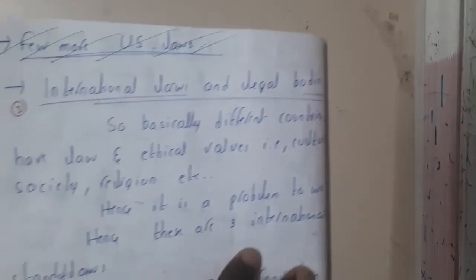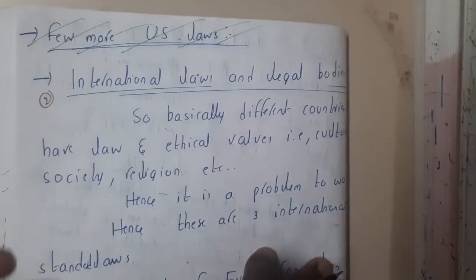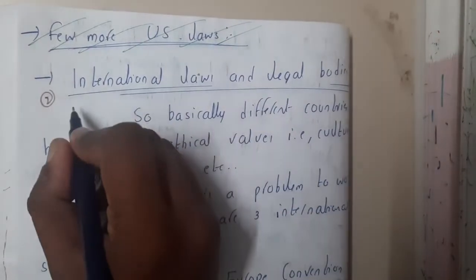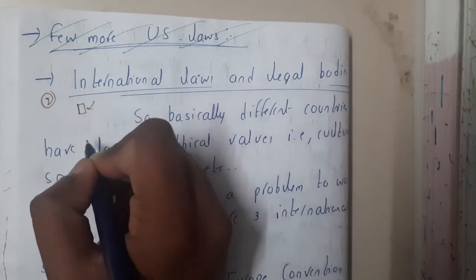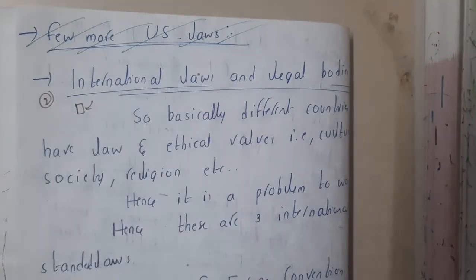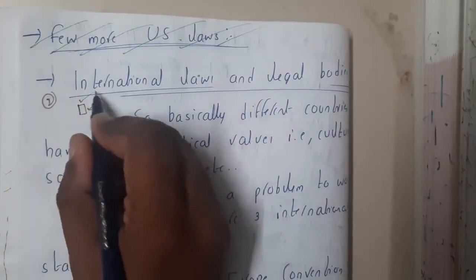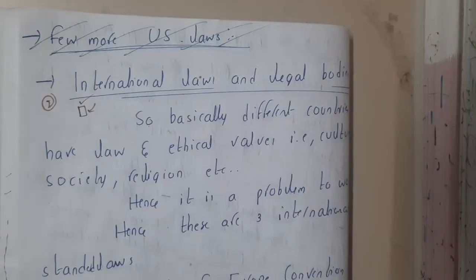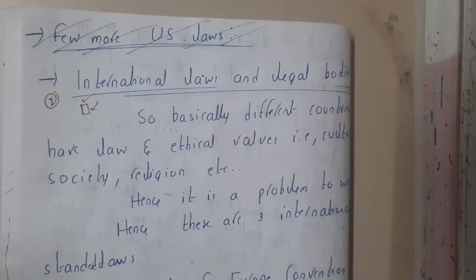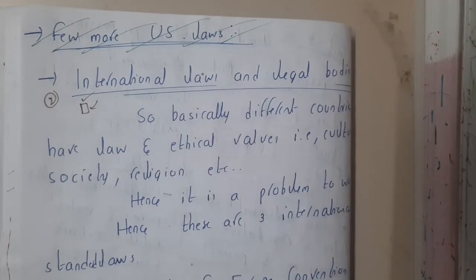I hope everyone got a basic idea about laws, ethics, and some U.S. laws. In the next lecture, we'll be discussing international laws and legal bodies. Note that the upcoming three to four lectures are completely theoretical. If you are comfortable reading on your own, you may skip them, otherwise please watch — they are around two to five minutes each. See you in the next lecture, thank you for watching.